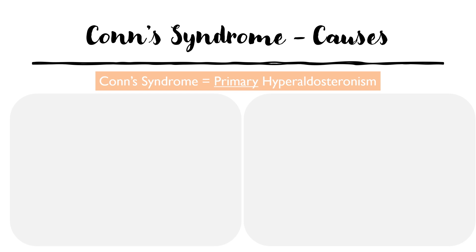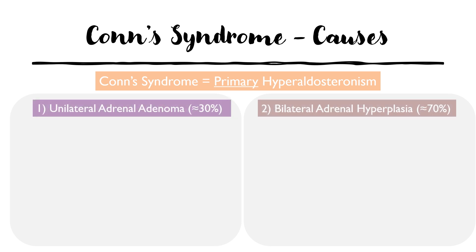Now that we understand how aldosterone works, we can turn to Conn's syndrome, also known as primary hyperaldosteronism. 'Primary' means there's a problem with the target organ — the adrenal glands — and 'hyperaldosteronism' means too much aldosterone in the blood. There are two main causes: unilateral adrenal adenomas and bilateral adrenal hyperplasia.